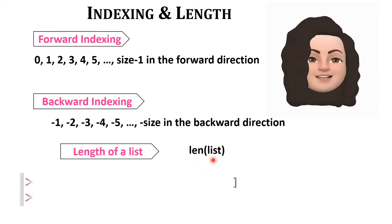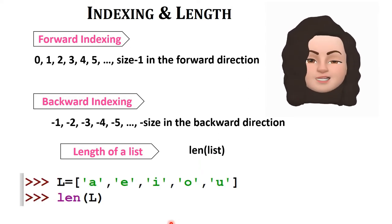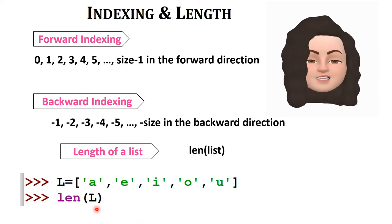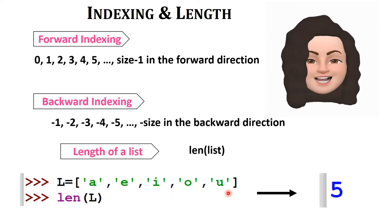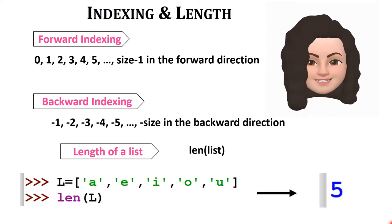For example, L is equal to ['A', 'E', 'I', 'O', 'U']. Counting the elements: 1, 2, 3, 4, 5. So the length of the list L is 5, calculated using the len function.